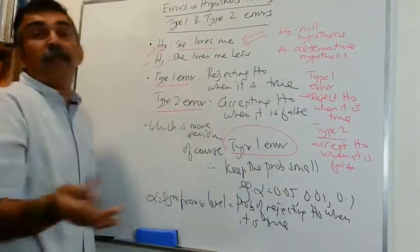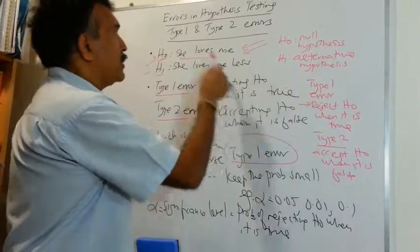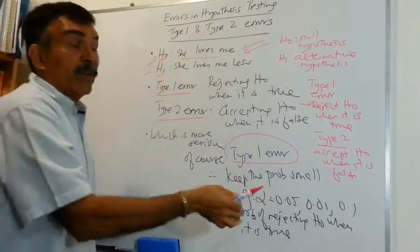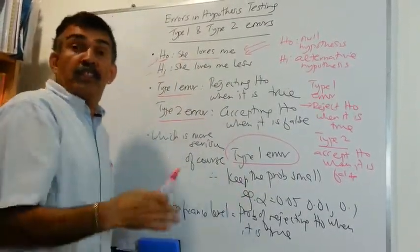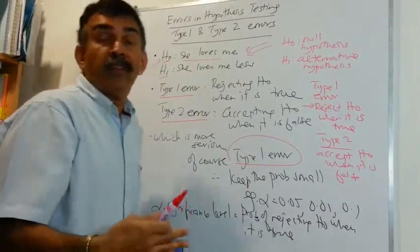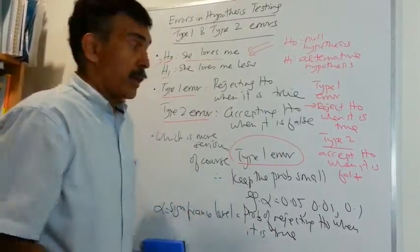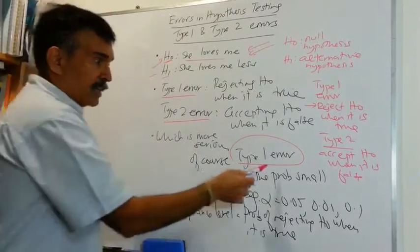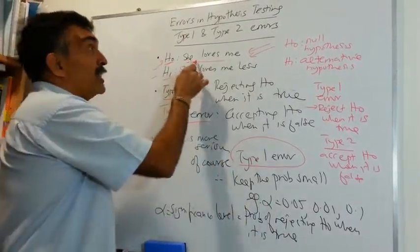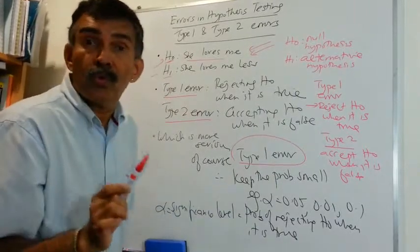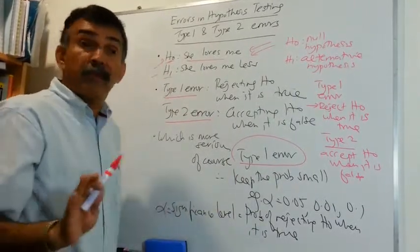Now, accepting H0, let's say Type 2 error. You accept H0. She loves me when it's not true, it doesn't matter. Because as time goes along, other things may develop and you will come to other decisions later on. But as of now, Type 1 error, that is, if you reject it when you know it's true, then we're in deep trouble.